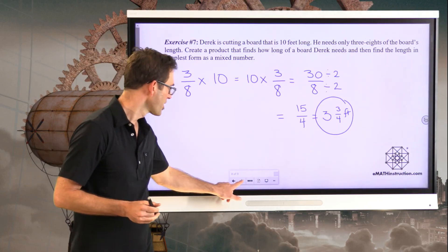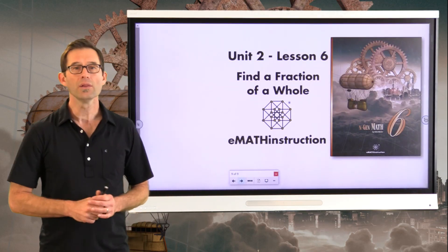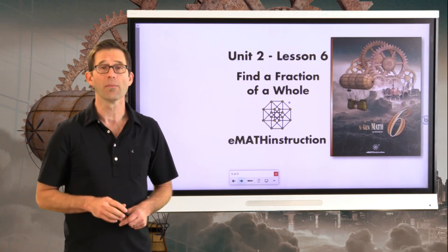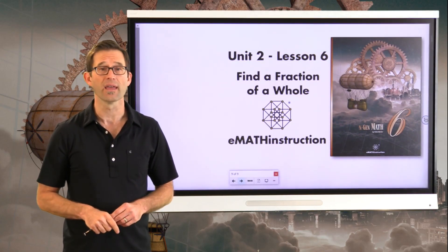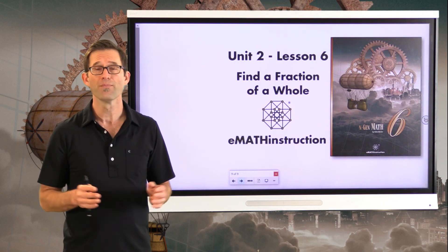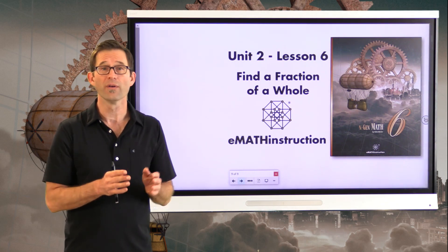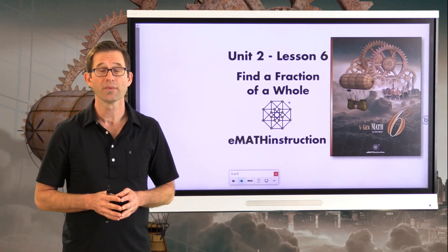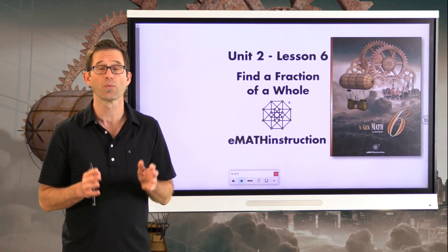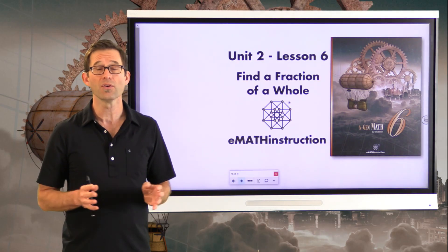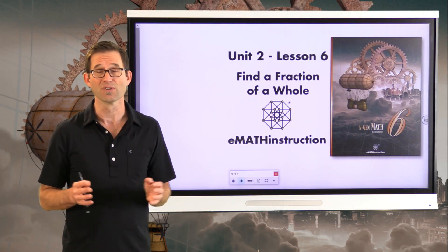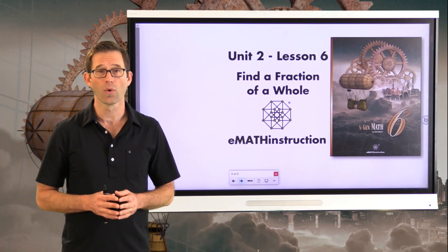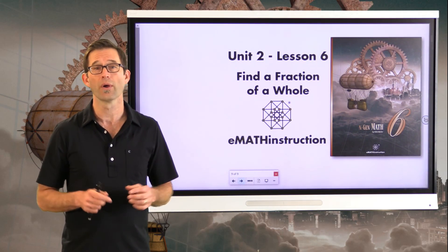Today we looked at finding the fraction of a whole. Generally, if we're finding two-fifths of a whole, we find one-fifth of the whole by dividing by five, then multiply by two — if that's possible, because that's the best way to think about it. If the whole isn't nicely divisible, we can always flip the order of multiplication and use what we already know.